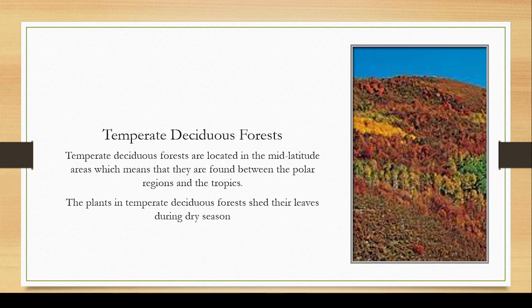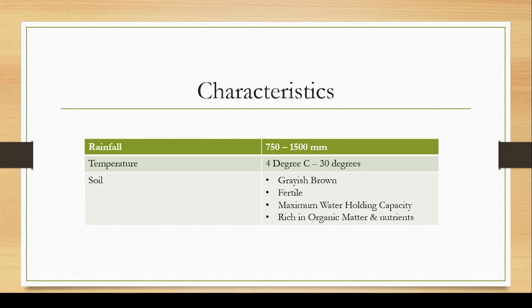Moving towards the second category, the temperate deciduous forest consists of forests located in the mid-latitude areas, meaning they are found between the polar regions and the tropics. The plants in the temperate deciduous forest shed their leaves during the dry season. In Pakistan, these are located in Neelum Valley and Shogran. Worldwide, these are located in India, Southeast Asia, China, Australia, Japan, and North and South America.